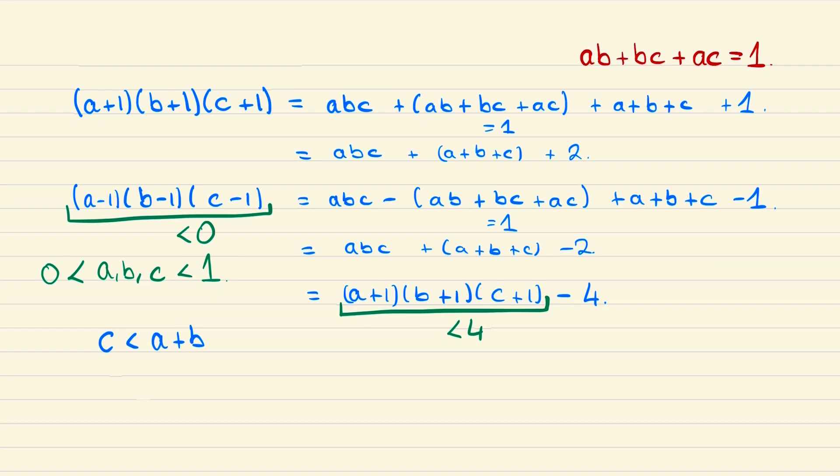So multiplying this equation by c, we can show that c squared is less than ac plus bc, and from our starting equation we know that this is equal to 1 minus ab. Since ab is positive, we know that this will be less than 1, or in other words this implies that c is less than 1. By symmetry we can show that a and b will also be less than 1, and hence we arrive at our desired result.